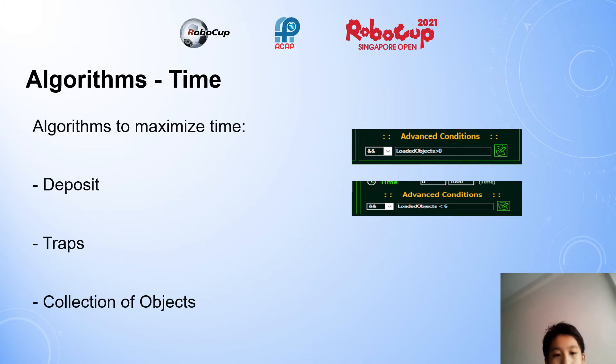Now I'm going to discuss and show you some of the special algorithms that we developed to solve specific problems. For example, we developed a few algorithms for time. So it only deposits when there are objects, it only aborts trap when there are objects, and it only collects objects when the loaded objects is less than 6. So this is how we do it. Like for example, loaded objects is greater than 0 or loaded objects is less than 6.